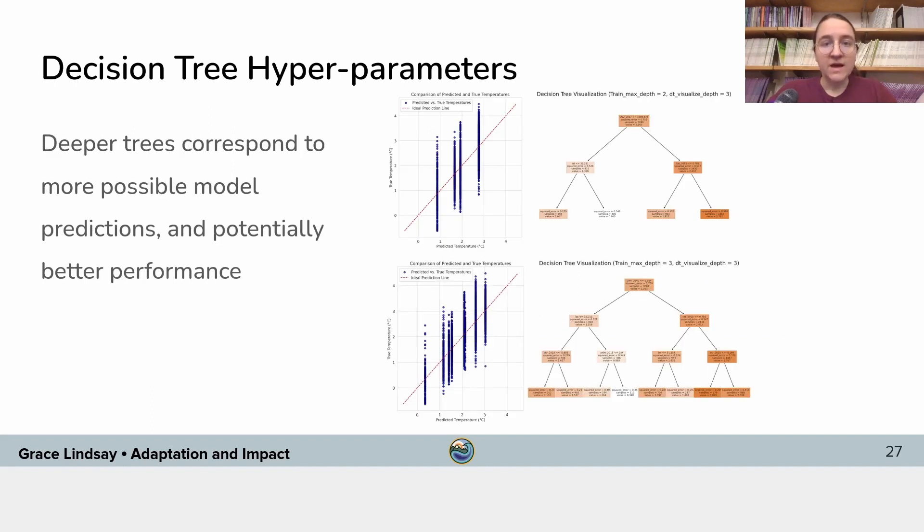Generally, if you have a deeper tree, you might have better performance. Because if you look, for example, here, this tree that only splits twice, there are only four values that it can output. And so in a regression problem, it's only going to be able to predict four different numbers for every set of inputs that it's given. And the true value here, the true temperature, for example, takes many more than four values. So you want a model that can give you a good number of outputs so that it can better match the data that it's trying to learn to fit.